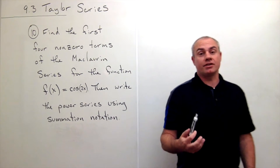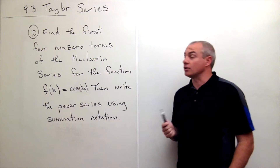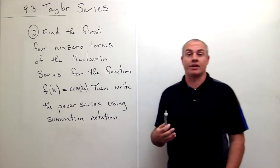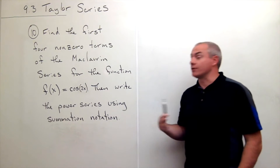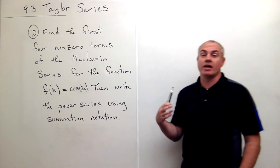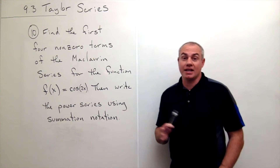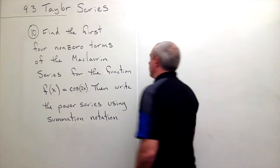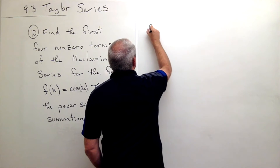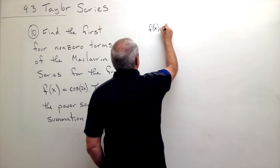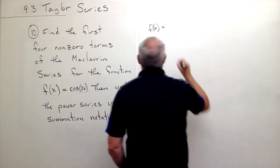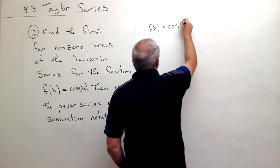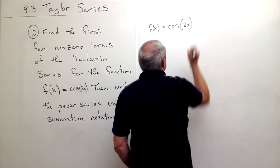The first thing to remember is that if I have a Maclaurin series, then a, the center point of my series, is equal to zero. And when I'm trying to find any Taylor series, the way I want to start is to write down the function. So I write down f of x, and in this case that's cosine of 2x.